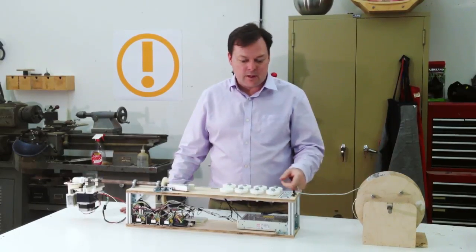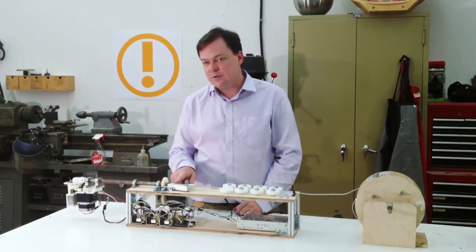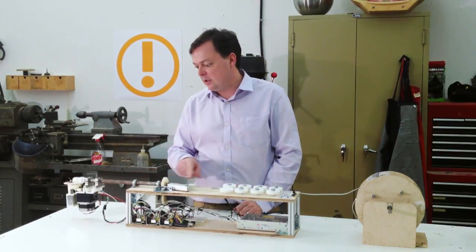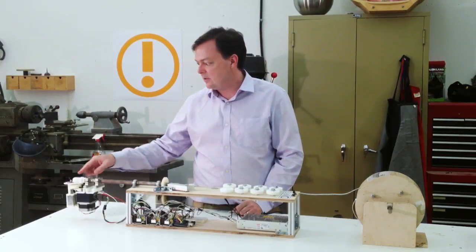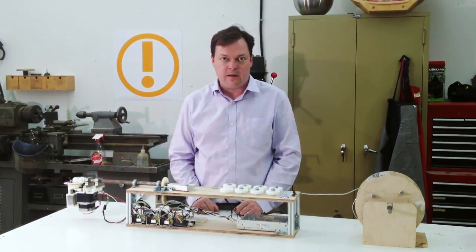First we have a spool of aluminum wire coming through the straighteners, then it goes to the feed. The feed is pulling it out of the straightener and down the tube to the bender, and I'll show you how that all goes together.